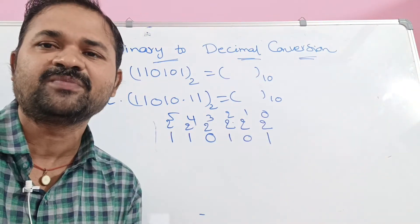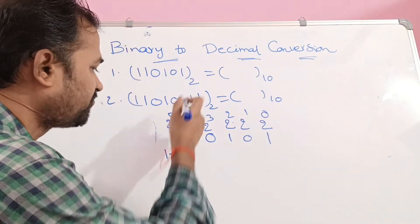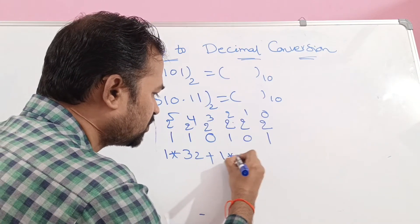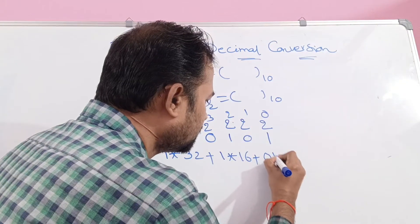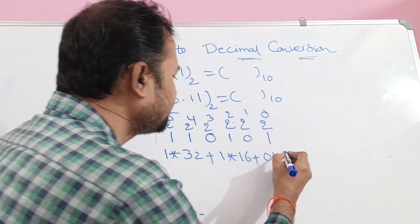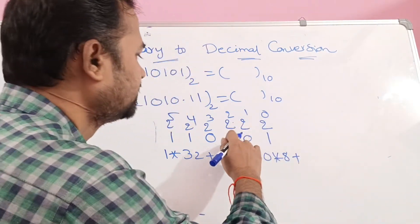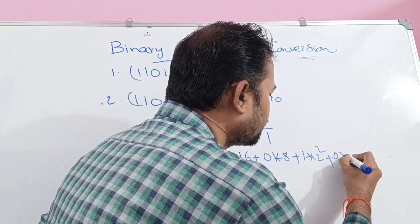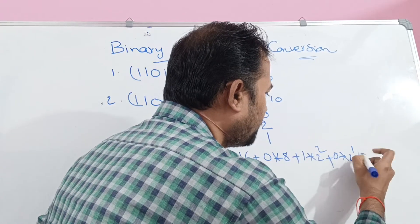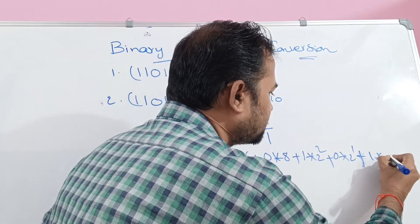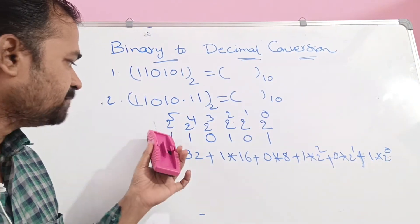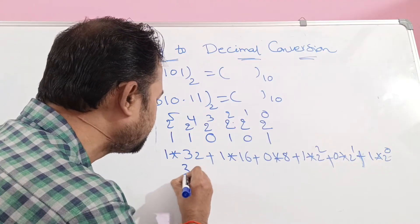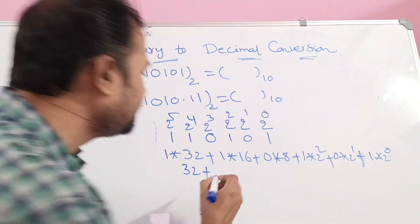Then we perform the multiplication operation. So: 1 into 2 power 5 — 2 power 5 means 32. Plus 1 into 2 power 4 — 2 power 4 means 16. Plus 0 into 2 power 3 — 2 power 3 is 8. Plus 1 into 2 power 2. Plus 0 into 2 power 1. Plus 1 into 2 power 0. So we perform the multiplication and then add the corresponding terms. So 1 into 32 means 32, plus 1 into 16 means 16.